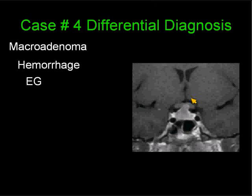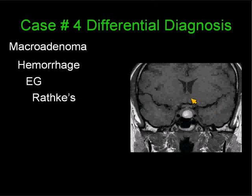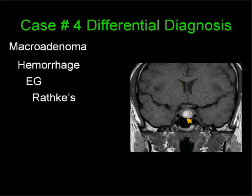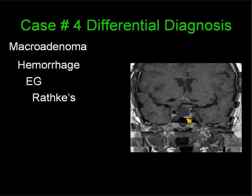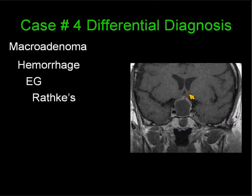Eosinophilic granuloma may involve the pituitary gland and stalk — these are children, and it is a difficult diagnosis to make unless you get a biopsy. Rathke's cleft cysts are seen quite often; they can have variable signal intensity and appearance. Only 1% of all craniopharyngiomas are intrasellar, while a Rathke's cleft cyst is much more common.